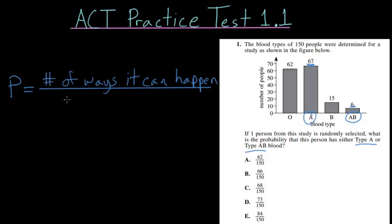This may seem fairly abstract when it's just written as a definition, but in practice it's not too difficult to actually use. For our particular problem, we're trying to find the probability that a person randomly selected has either type A or type AB blood.